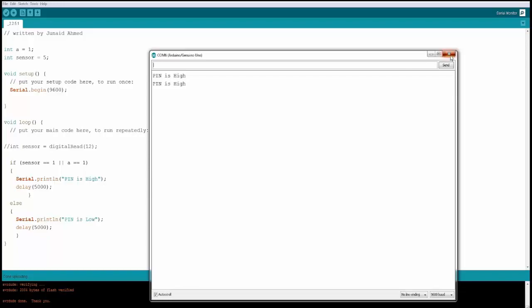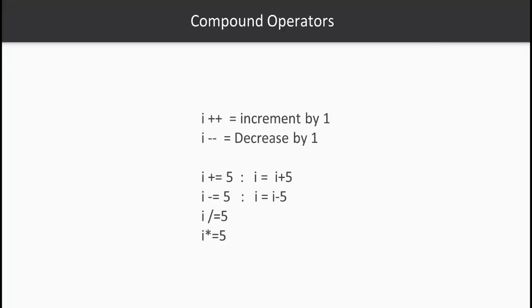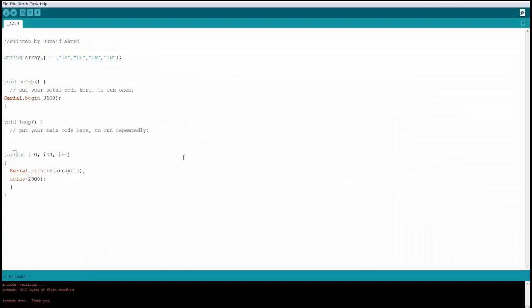The next set are the compound operators, used to increment or decrement a value. i++ and i-- are commonly used in loops. i += 5 is equivalent to i = i + 5. You can similarly use i -= , i /= , and i *= to combine operations.